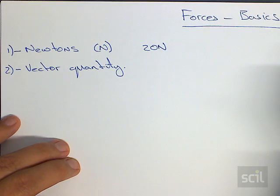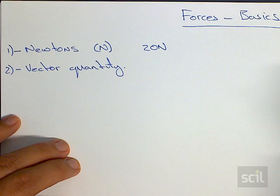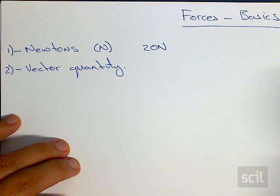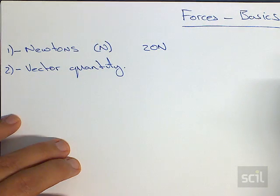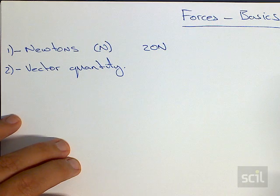and a scalar has just a magnitude. These include things like time, mass, which is measured in kilograms. We could probably include distance in meters, and many other quantities.